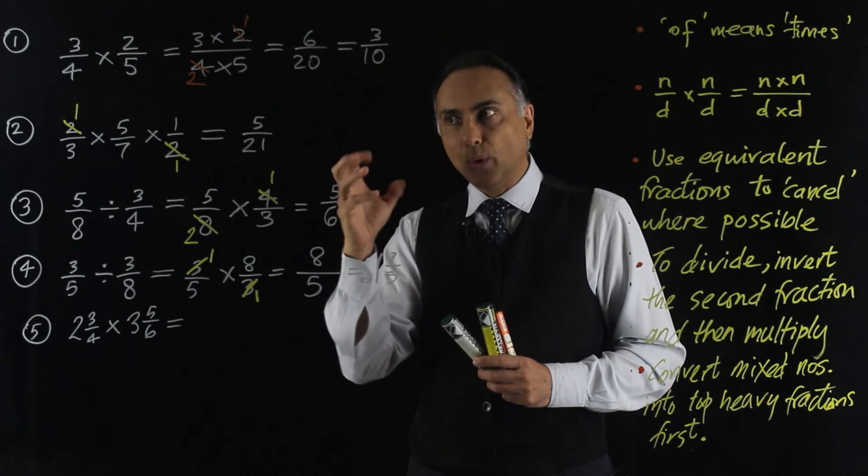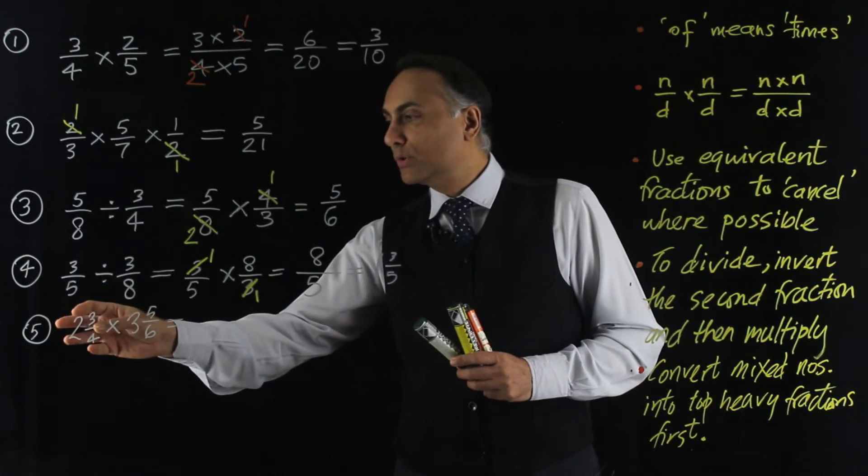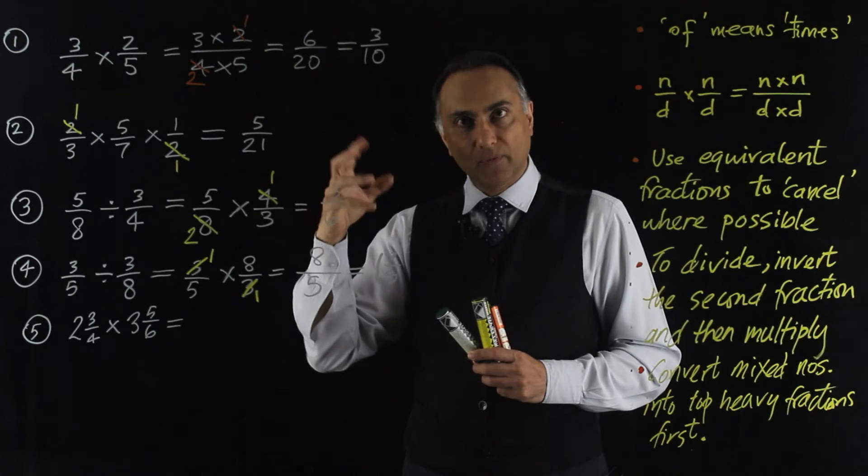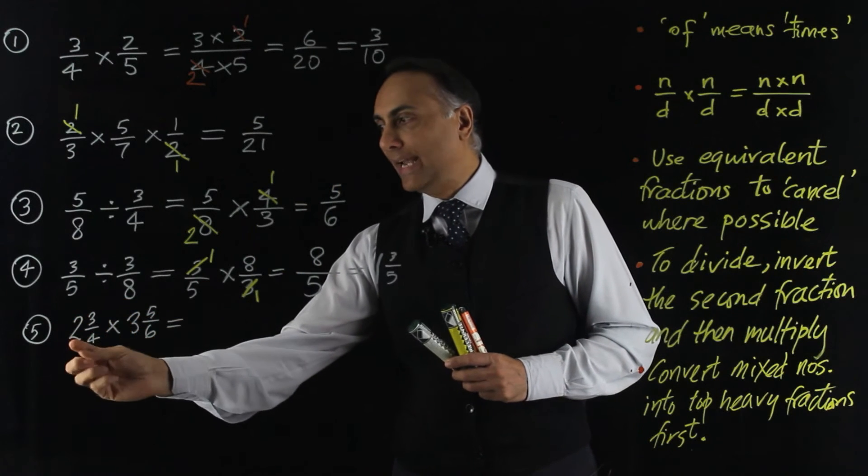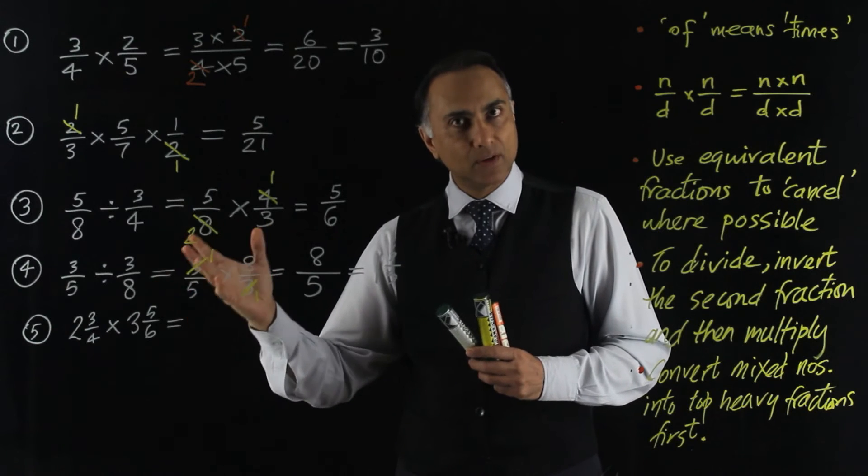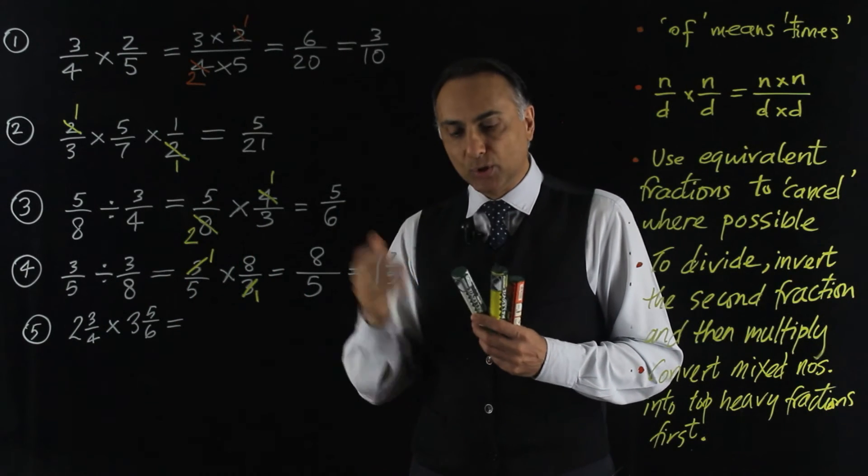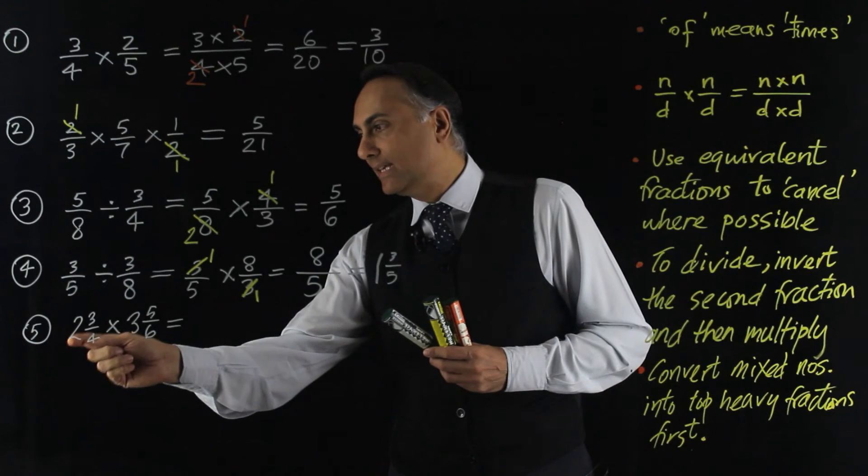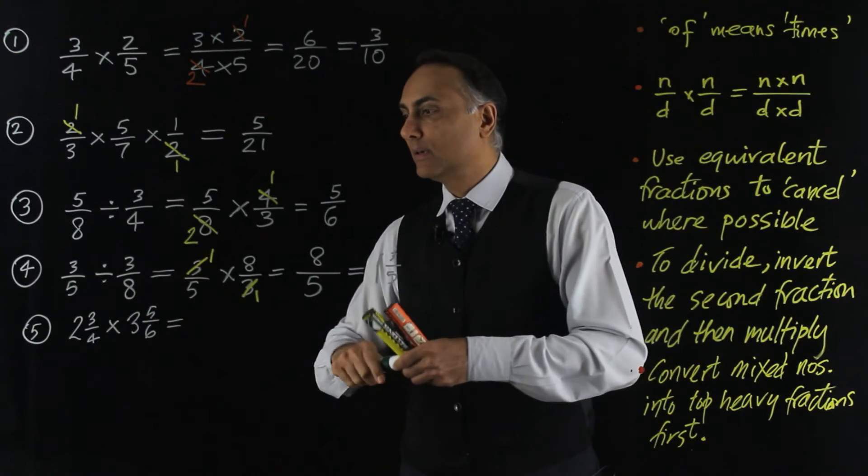and here we have 2 whole. Each whole 1 would be made up of 4 quarters. So 2 wholes would be made up of 8 quarters. So that's 8 quarters plus another 3 quarters, making a total of 11 quarters. The way we normally do it, the shorthand way, is to say 4 twos are 8 plus 3 is 11 quarters.